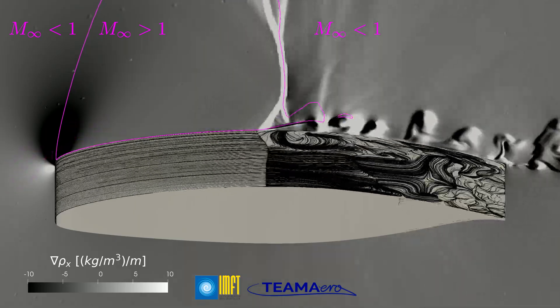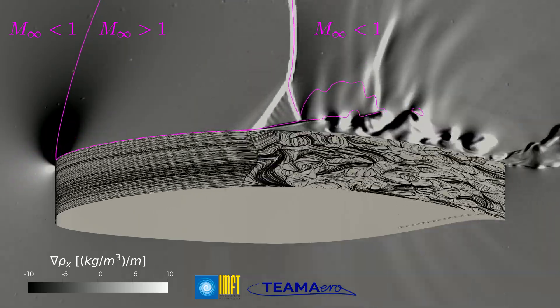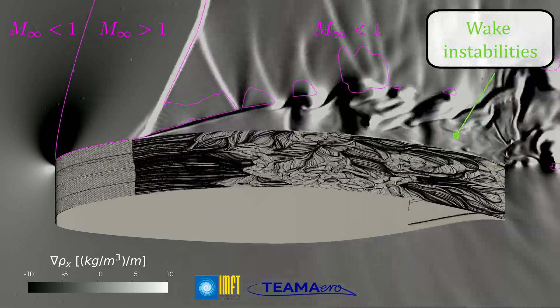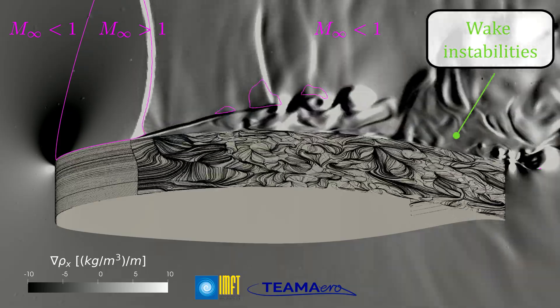However, the flow deceleration at the shock wave in combination with the airfoil curvature and the feedback effects coming from the wake instabilities causes separation of the boundary layer by inducing an adverse pressure gradient.